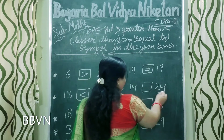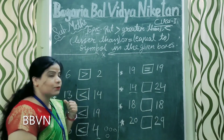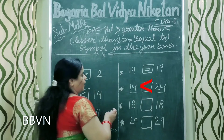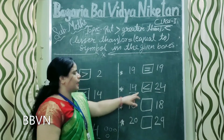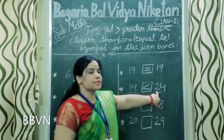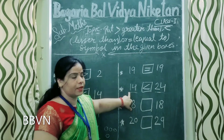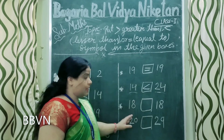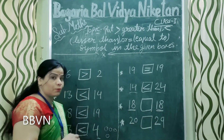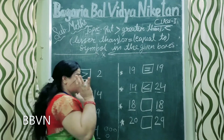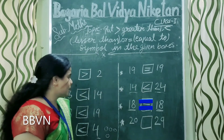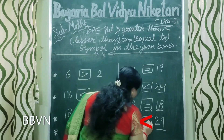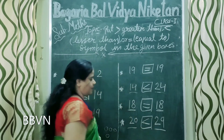Now let's see next. Yahaan hai 24 aur yahaan 14. Aap bataayi, alligator konsa number khaega? Alligator will eat 24, because 24 is the greater. To uska face hamein is side open kerna hai. Bacchou, agar greater ki taraf value ho to face udhar kar do — to automatic uska lesser ki taraf uska back ho jayega. Greater than and smaller, is lesser than. So, 29 ki side in ka face open kar do.